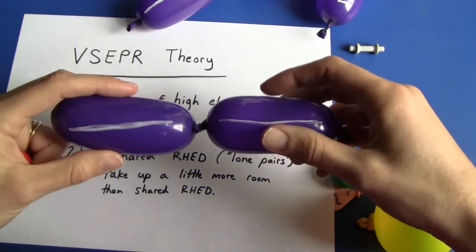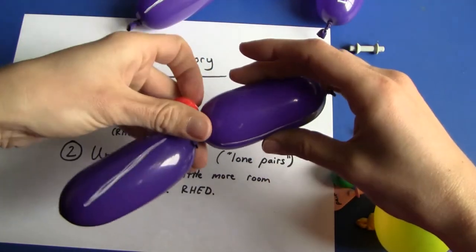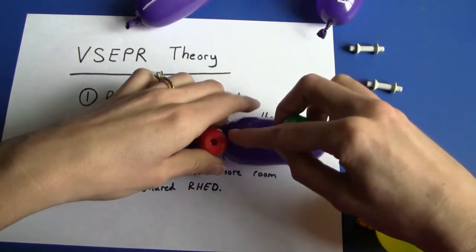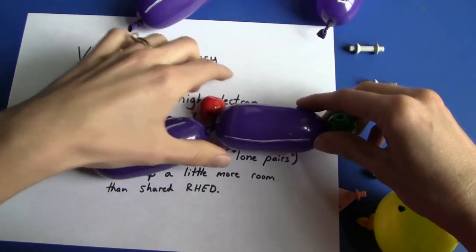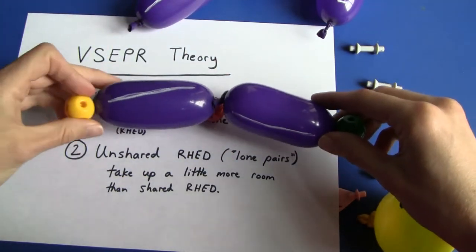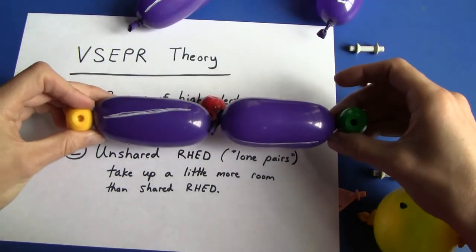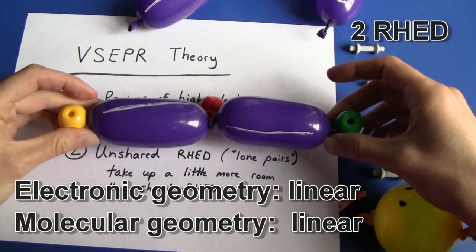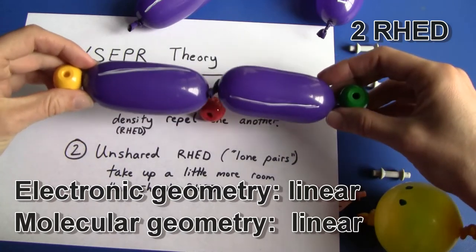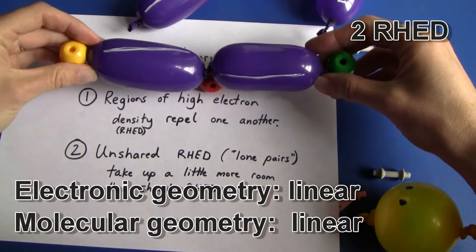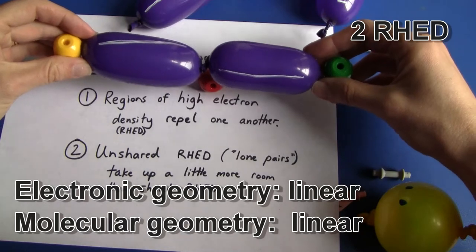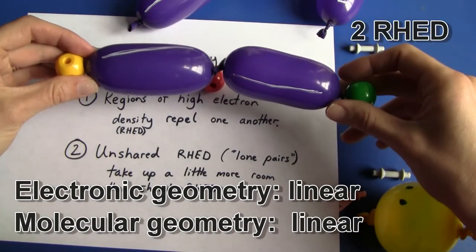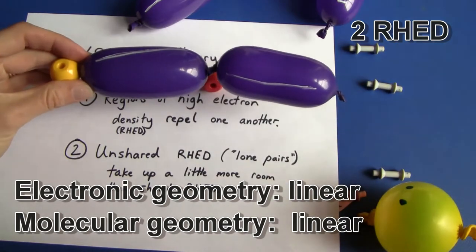If we tie two of these regions of electron density together — imagining a central atom with two atoms bonded to it — the shared electrons between each of the atoms are going to repel one another. They're negatively charged. Negatively charged electrons repel and get as far away as possible, so it's 180 degrees from one atom to the other.